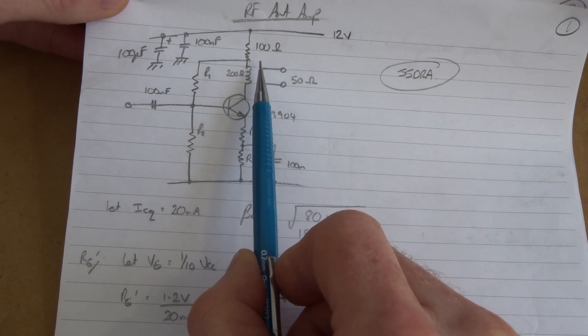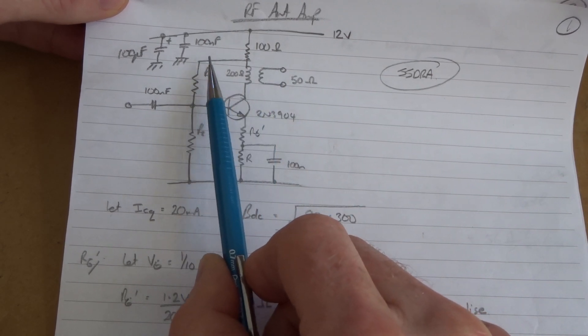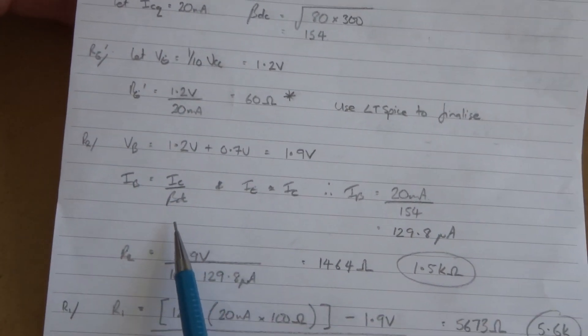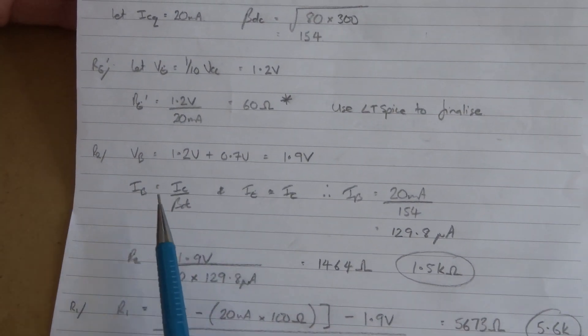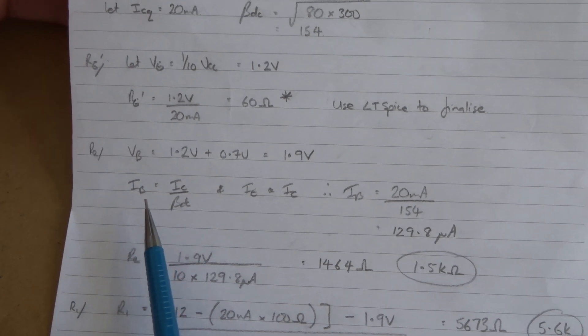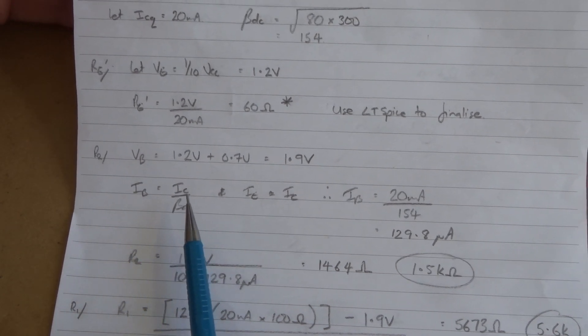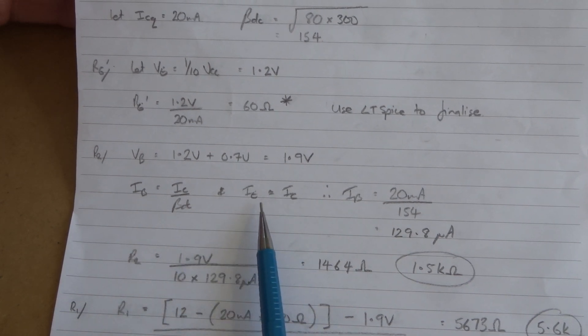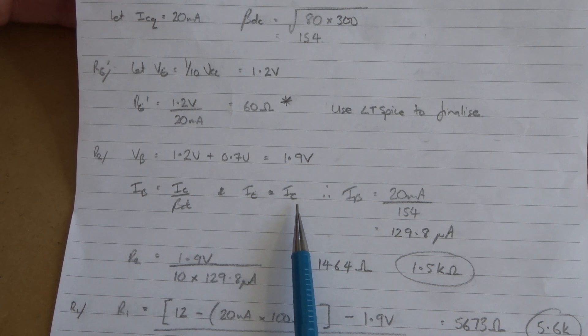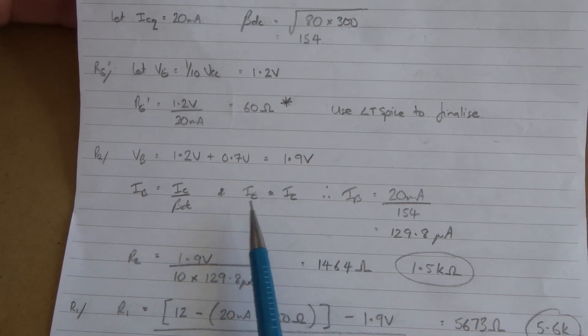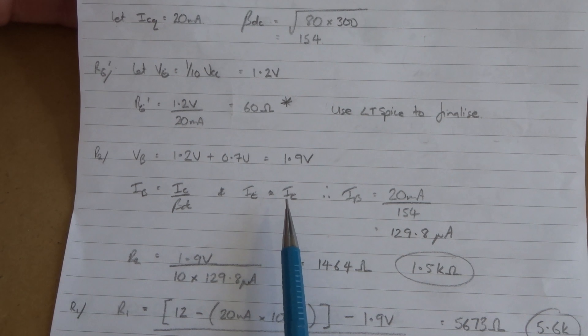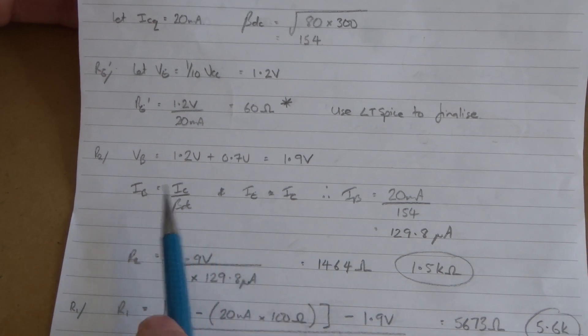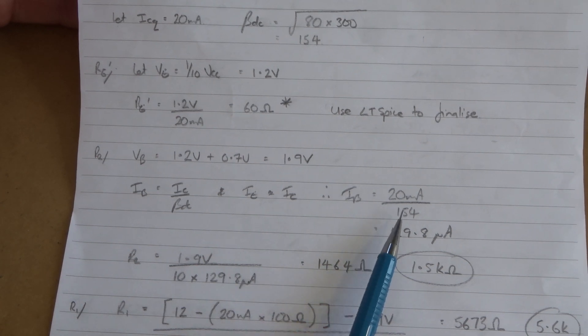I'm going to take that into consideration when working out R1. We know that base current equals collector current divided by beta DC, and emitter current approximately equals collector current. The only difference is the base current which is in the microamps, so we can work out base current by going emitter current divided by beta DC.